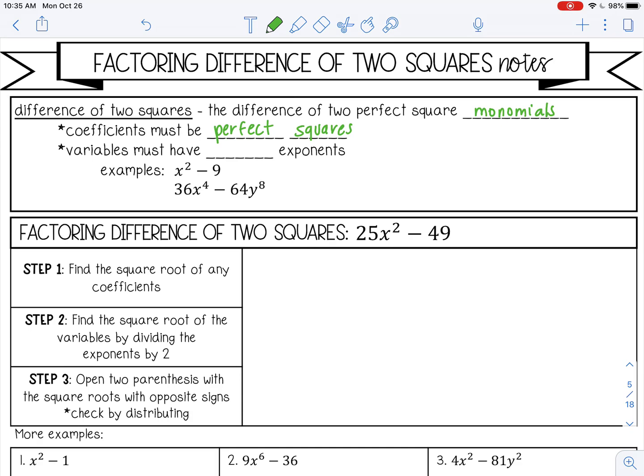Perfect squares are like 1 times 1 is 1, 2 times 2 is 4, 3 times 3 is 9, 4 times 4 is 16. All of these are perfect squares: 25, 36, 49, and so forth. You may want to write down the perfect squares if you're not super familiar with them. That's going to help you a lot in this lesson. So let's go all the way up to 12.